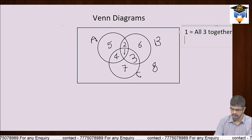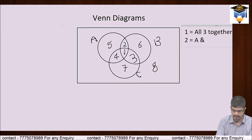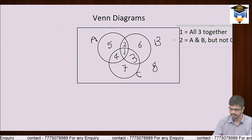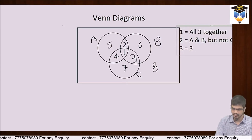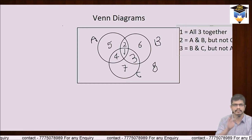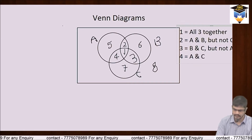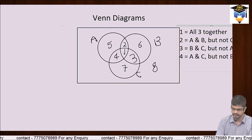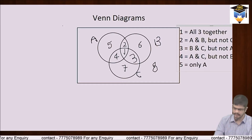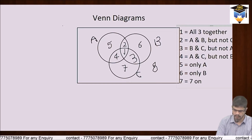Area 2 is A and B but not C. Area 3 is B and C but not A. Area 4 is A and C but not B. Area 5 is only A — na B hai na C. Area 6 is only B.